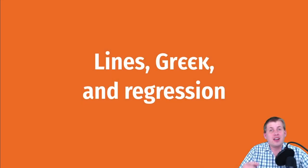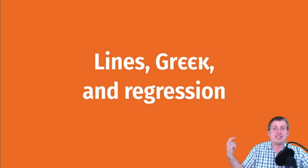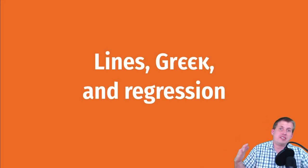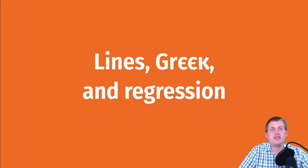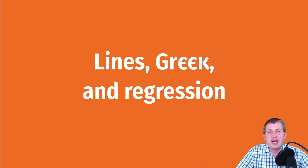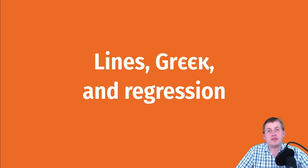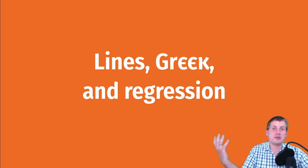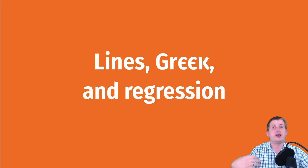If you draw an OLS line that fits the points in your data set fairly well, you have to do stuff with that — you have to figure out the slope and the intercept and other mathematical parts of that line, and then you can use those parts to make inferences about your population.